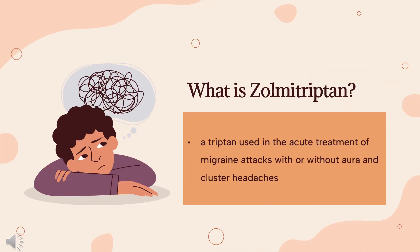What is Zolmitriptan? Zolmitriptan, sold under the brand name Zomig among others, is a triptan used in the acute treatment of migraine attacks with or without aura and cluster headaches. It is a selective serotonin receptor agonist of the 1B and 1D subtypes. It was patented in 1990 and approved for medical use in 1997.